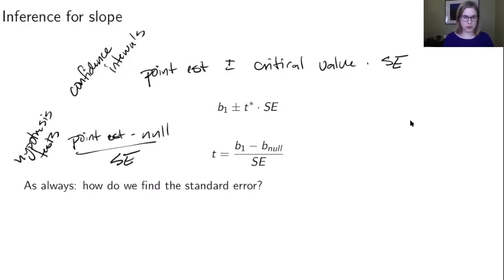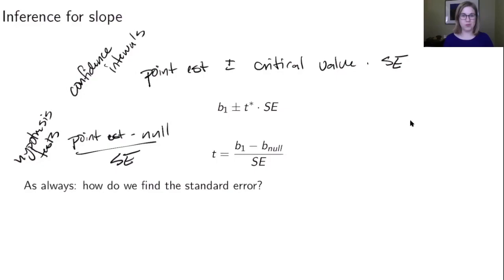Our two main inferential tasks are doing confidence intervals—asking what are some other reasonable values we could have observed—and hypothesis tests, asking how different is this number from zero. We're going to need to know how to do those things for a particular slope.